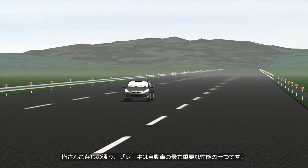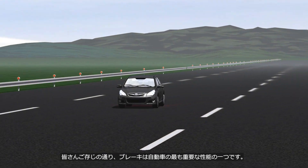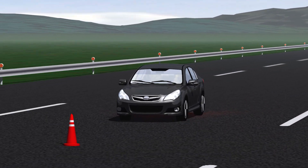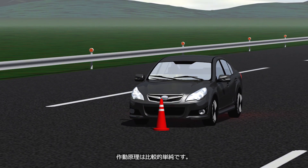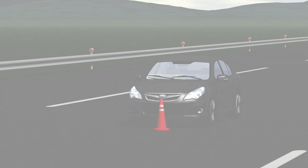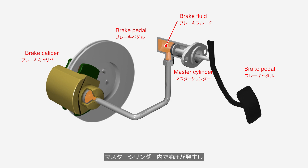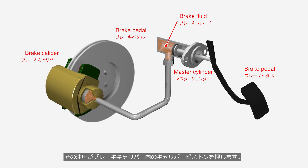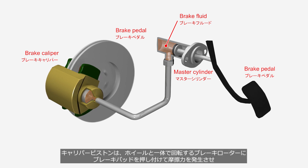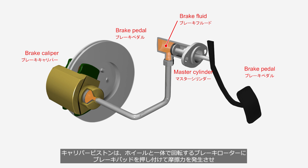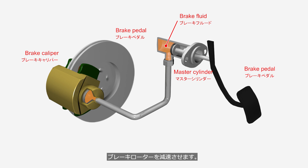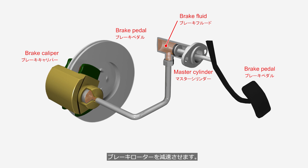Brakes are one of the most important features of a vehicle. The operating principle is quite simple. When the driver depresses the brake pedal, hydraulic pressure is generated in the master cylinder, which pushes the caliper piston in the brake caliper. The caliper piston presses the brake pads against the brake rotor, which rotates together with the road wheel, thereby slowing down the brake rotor through frictional force.